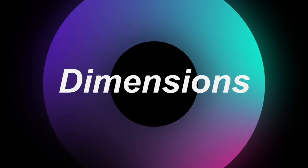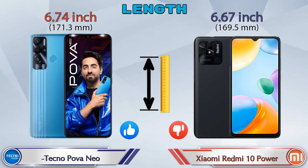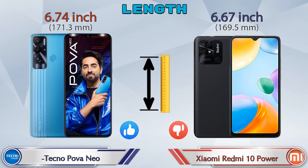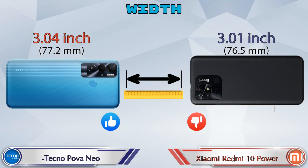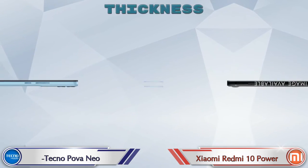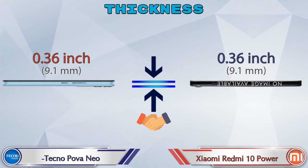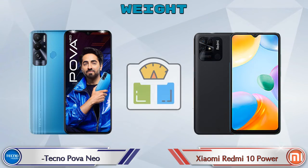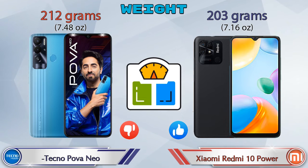Now let's check dimensions. Length: Power Neo is 6.74 inches and Redmi 10 Power is 6.67 inches, which is less than Power Neo. Width: Power Neo is 3.04 inches and Redmi 10 Power is 3.01 inches, also less than Power Neo. Both phones have the same thickness of 0.36 inches. Weight: Power Neo is 212 grams and Redmi 10 Power is 203 grams.